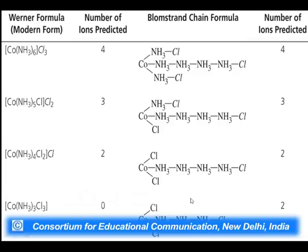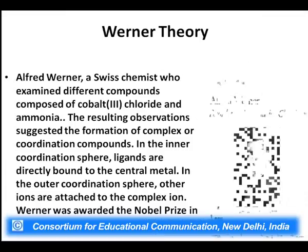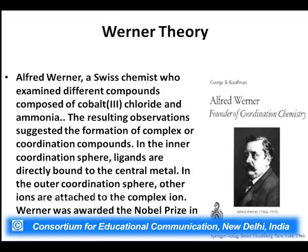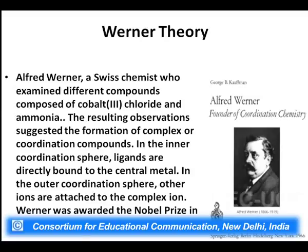At the same time, Alfred Werner, a Swiss chemist, was also working on cobalt amine complexes. He is aptly known as the founder of coordination chemistry because the formulation he gave is still considered the basis of coordination chemistry. He examined different compounds of cobalt trichloride with ammonia, and from his observations proposed that in coordination compounds there are two types of sphere: an inner coordination sphere, where ligands are directly bonded to the central metal, and an outer coordination sphere, where the counter ions remain ionizable. Werner was awarded the Nobel Prize in 1913 for his coordination theory.